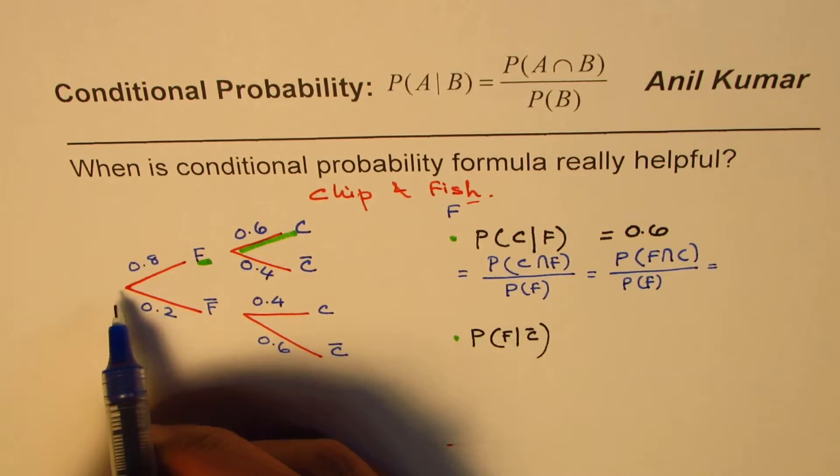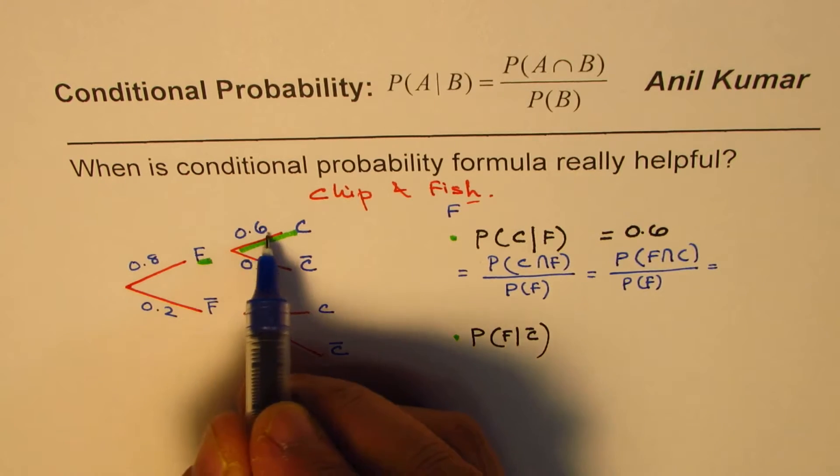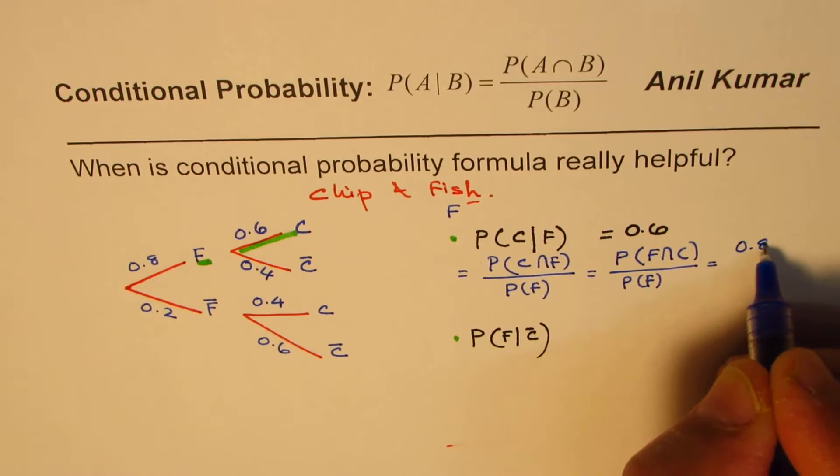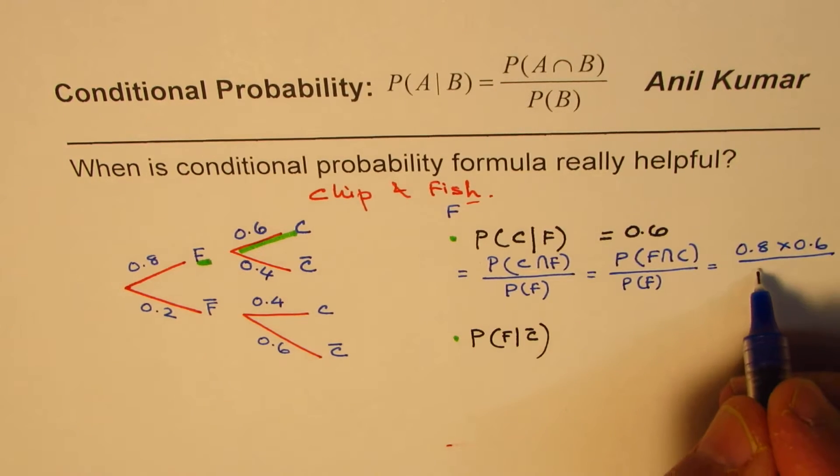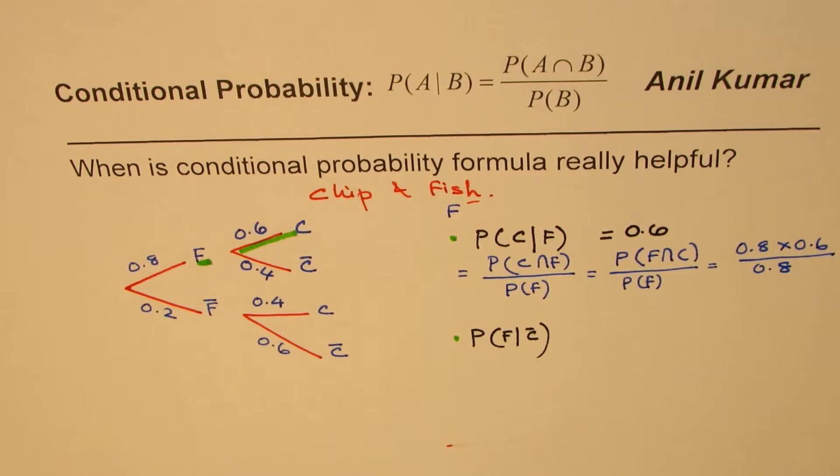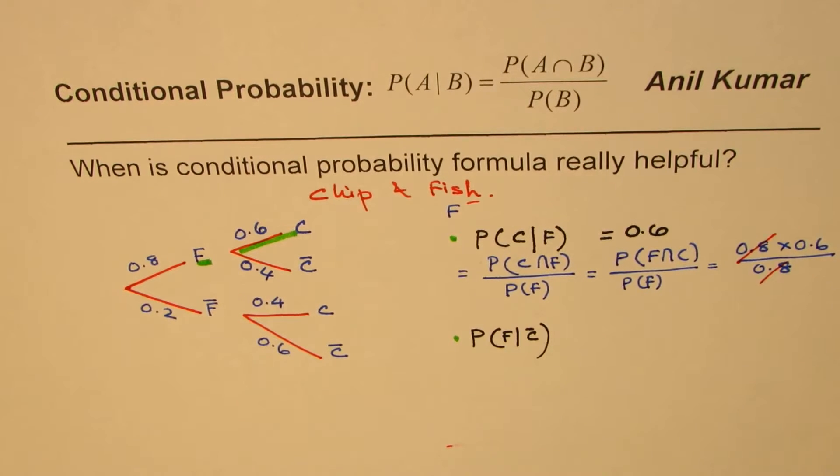So probability for fish and chip is 0.8 times 0.6, right? 0.8 times 0.6, divided by probability of fish is 0.8. So clearly, the formula also gives us the same result, which is equal to 0.6. So it is 0.6. So we get the same result. Straightforward.